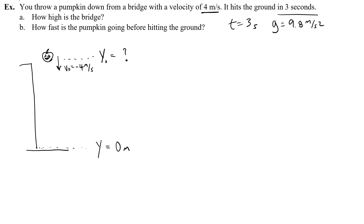Choosing the ground to be 0 is common in physics, and in this case it makes it easy — what was the height we started from if we ended at 0? So I've got time, I've got the acceleration, I've got the initial and final positions. To figure out part A, how high the bridge is, I'm going to use this equation: negative one-half g·t², plus v₀·t, plus y₀, because it has all of those variables inside of it.